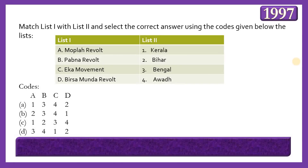Next matching question: Match revolts with regions. List 1: Moplah Revolt, Pabna Revolt, Eka Movement, Birsa Munda Revolt. List 2: Kerala, Bihar, Bengal, Awadh. The answer is option A — 1, 3, 4, 2 — meaning the Moplah Revolt occurred in Malabar (Kerala) in 1921 led by Ali Musliyar; the Pabna Revolt occurred in Bengal from 1870-76; the Eka Movement (Unity Movement), a peasant movement in United Provinces in 1921, is related to Awadh; and the Birsa Munda Revolt was in areas of modern-day Bihar and Jharkhand in the 1890s.